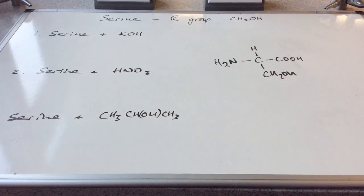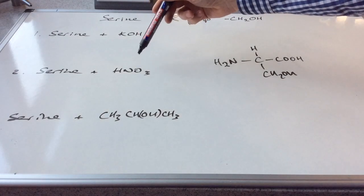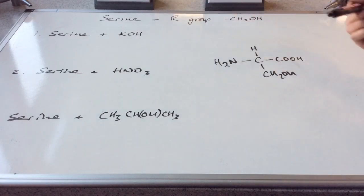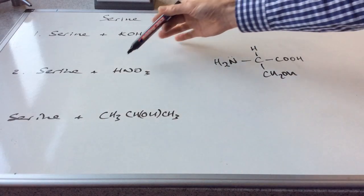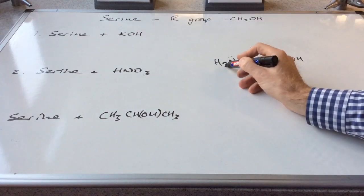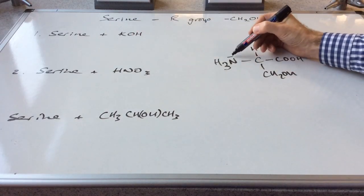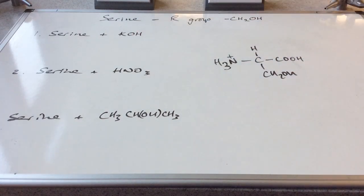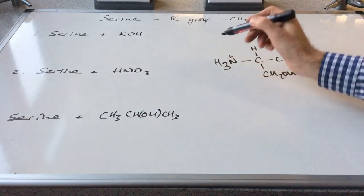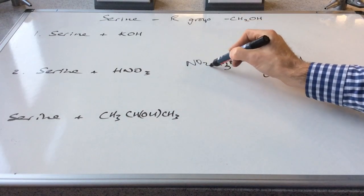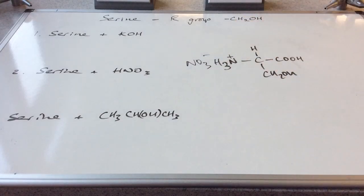So reaction two now, we've got nitric acid. So the acid is going to react with the base part of the amino acid. And there's a lone pair on this nitrogen. That's going to accept that proton. So this will become NH3+. And the leftover, the remainder of that is a nitrate ion. And so we're going to get NO3- as well. So we'll get that there.